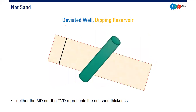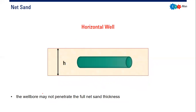For a deviated well in a dipping reservoir, H is the true perpendicular thickness, and again neither MD nor TVD represents the net sand thickness. Finally, for a horizontal well with a horizontally layered reservoir, the wellbore may not penetrate the full net sand thickness, meaning we cannot accurately estimate it — that's the challenge in our industry.